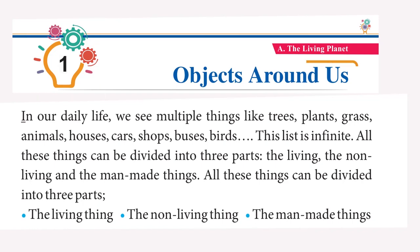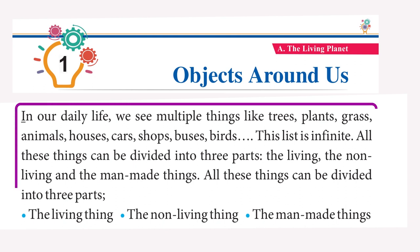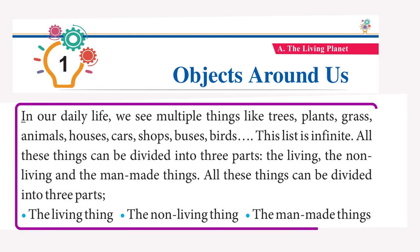Chapter 1: Objects Around Us. In our daily life, we see multiple things like trees, plants, grass, animals, houses, cars, shops, buses, and birds. This list is infinite. All these things can be divided into three parts: the living, the non-living, and the man-made things.